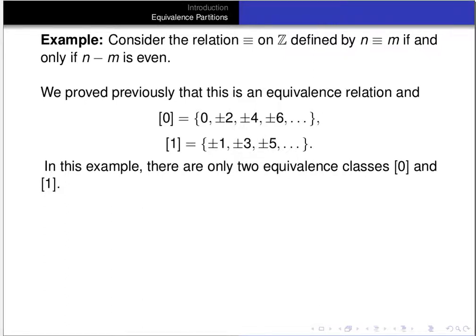So there are only two equivalence classes, though they may have different names. For instance, the equivalence class of 1 is the same as the equivalence class of negative 1, 3, negative 3, and so on. We would write Z mod equivalence as the set containing the equivalence class of 0 and the equivalence class of 1 — though it could equally be written using the equivalence class of 2 and the equivalence class of 3, or the equivalence class of 18 and the equivalence class of negative 37.